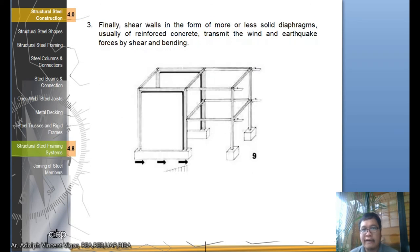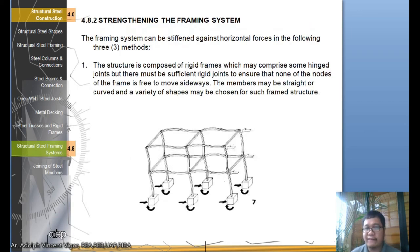And the third method: shear walls in the form of more or less solid diaphragms, usually of reinforced concrete, transmit the wind and earthquake forces by shear and bending to the building. As you can see here, there's a shear wall to strengthen the building. When you say shear wall class, these are not made of CHB - this is pure solid concrete, so it's really strong. Remember the three ways in strengthening the framing system.